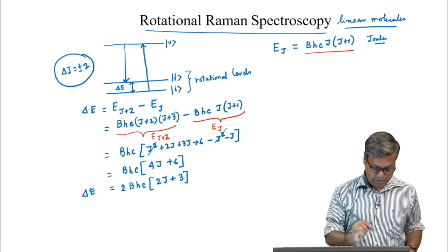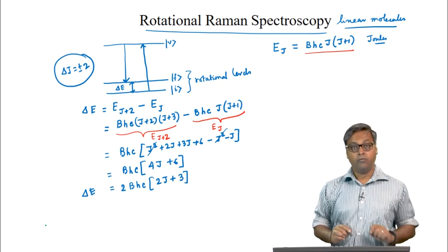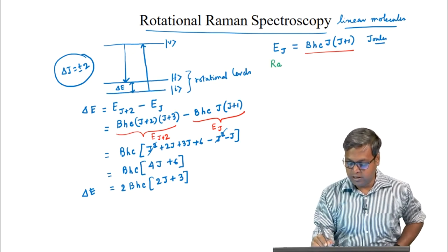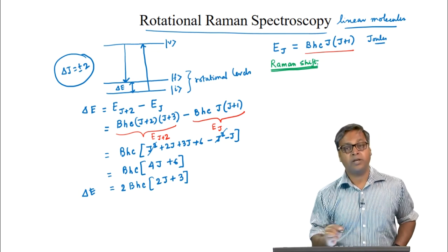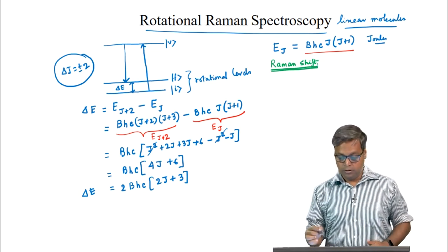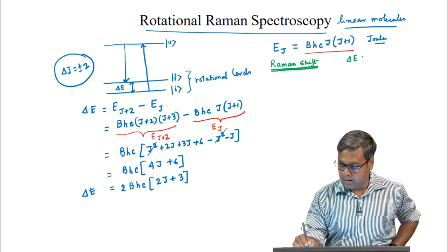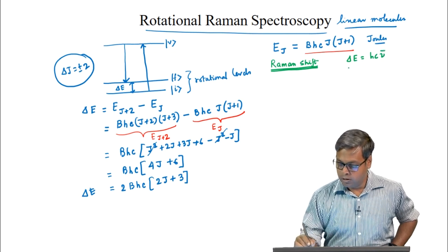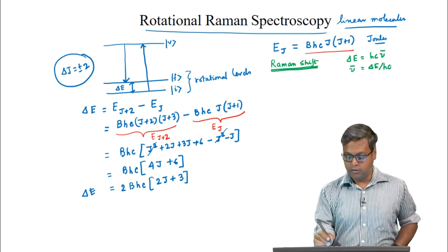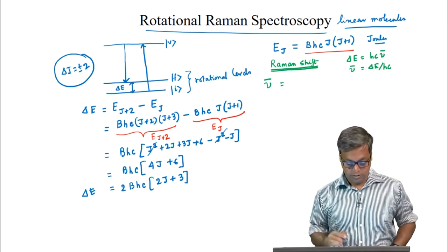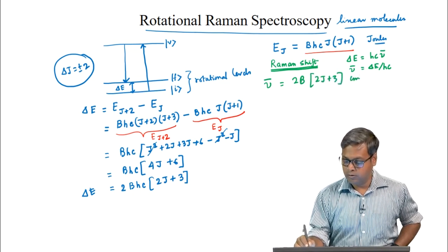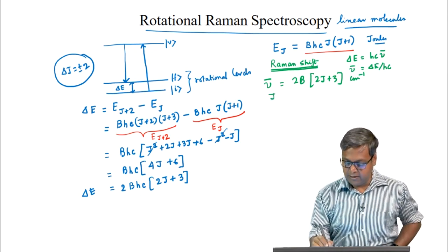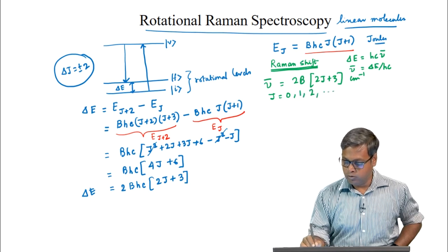Now if we convert this energy difference into wave numbers — known as the Raman shift, that is the shift from the excitation wavelength or wave number — we know delta E equals hc·nu_bar, so we can write nu_bar equals delta E divided by hc. Here we can write nu_bar equals 2B(2J+3) wave numbers, where J can take values 0, 1, 2, dot dot dot.